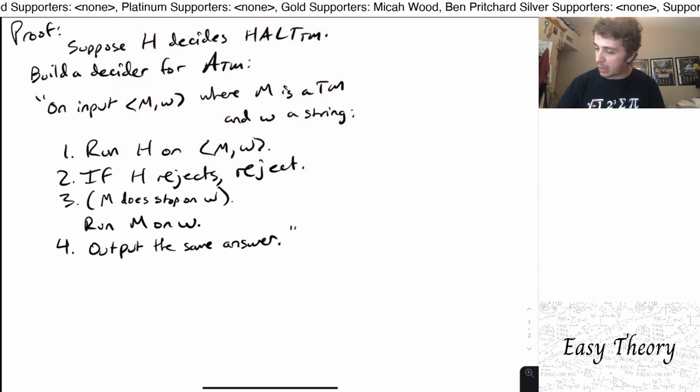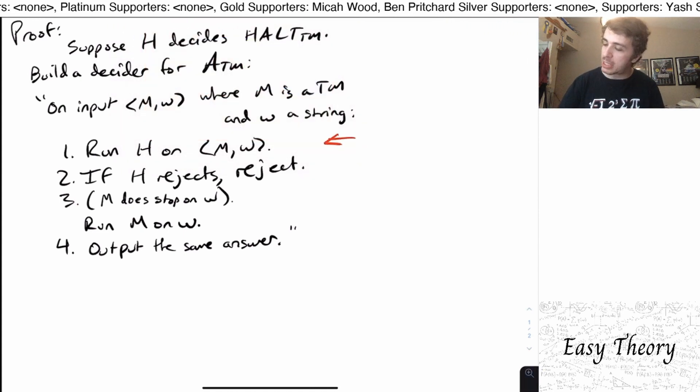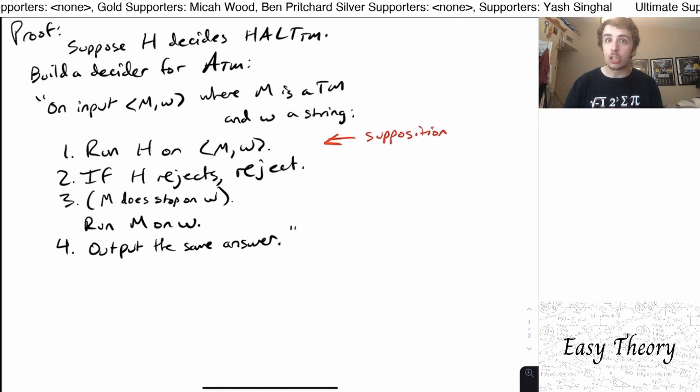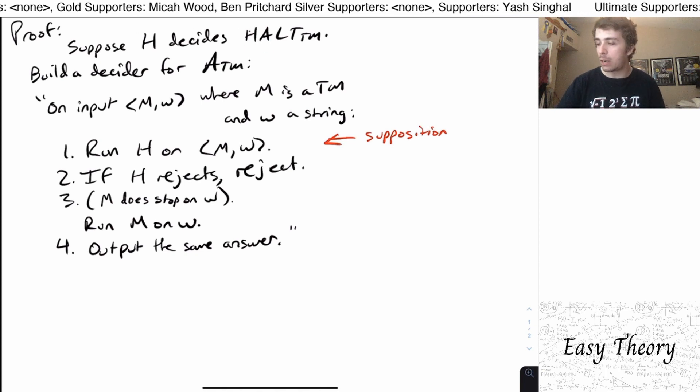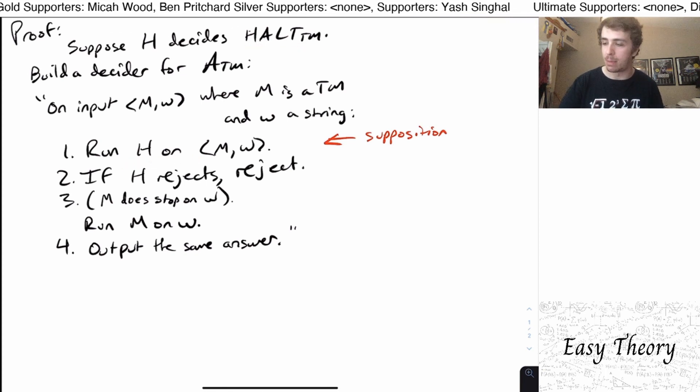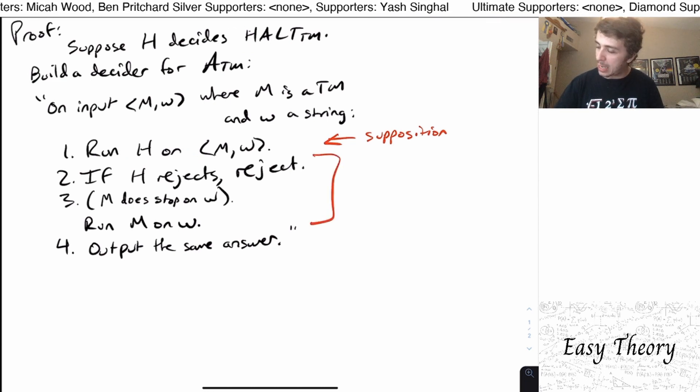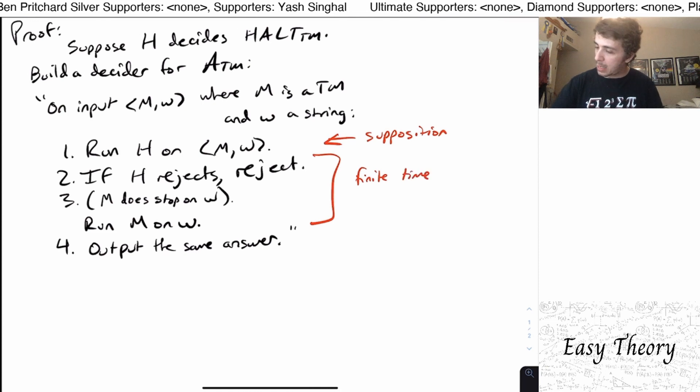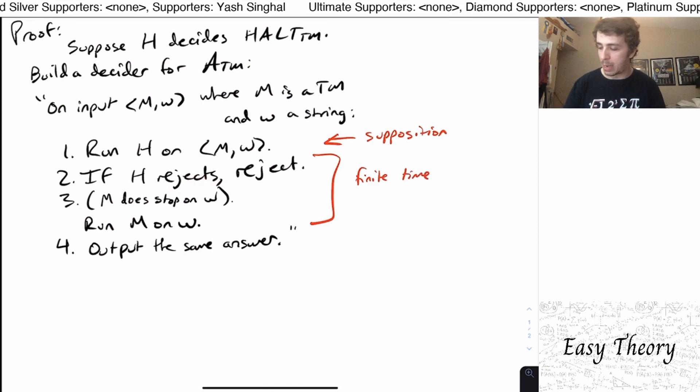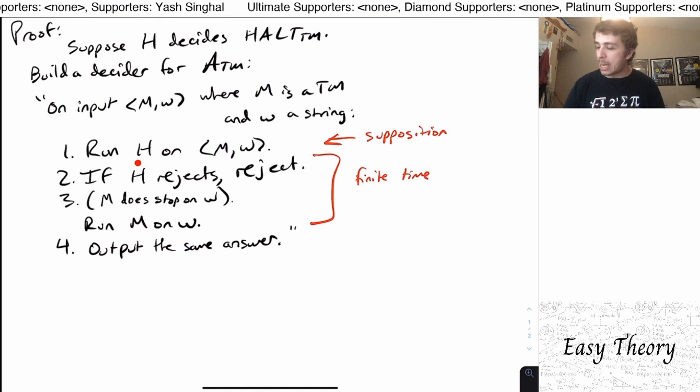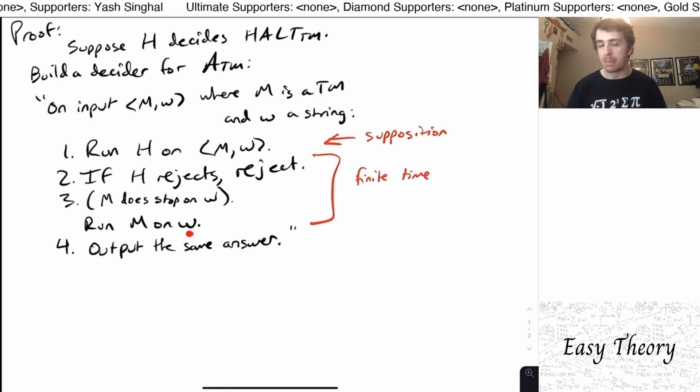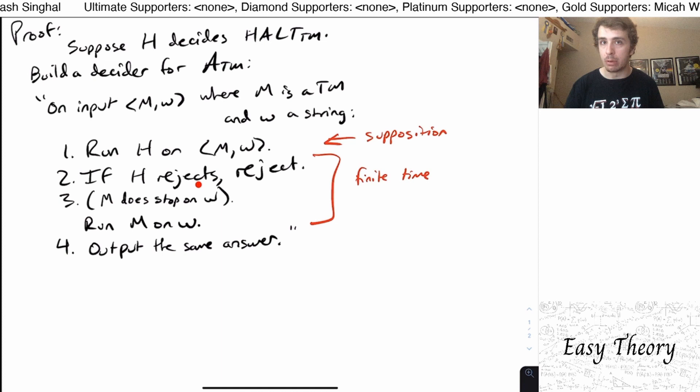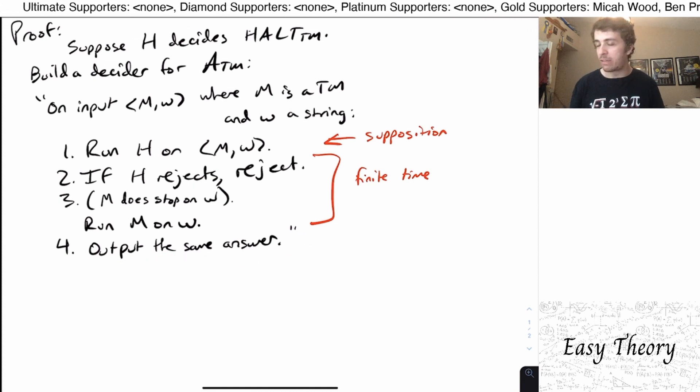Well, now let's actually figure out whether we can even build this machine. Well, we can do step one based on the supposition. So the supposition here told us that H exists. It's a decider for Halt TM. So we can actually do this step in a finite amount of time. Well, these two steps run in a finite amount of time because, well, step two is pretty clearly going to run in a finite amount of time. Step three does because H guarantees that M will stop on input W. It can't run forever because if it did, we would have stopped in step two above. And then step four obviously runs in a finite amount of time too.